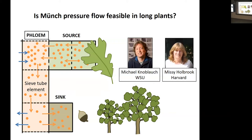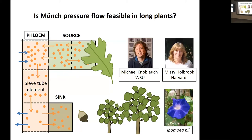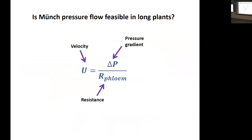If resistance increases with length, then as trees grow taller, they would have slower and slower carbon transport — which is problematic for how we think about growth and the vascular system. I worked in collaboration with Missy Holbrook and Michael Knoblauch at Washington State to get at this question, starting with a simpler system than trees: a morning glory. We wanted to measure as much as we could about the phloem and see if the numbers add up, and whether they change as you increase the length of the plant.